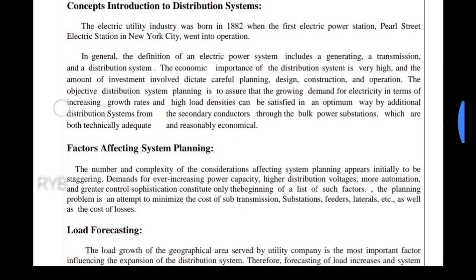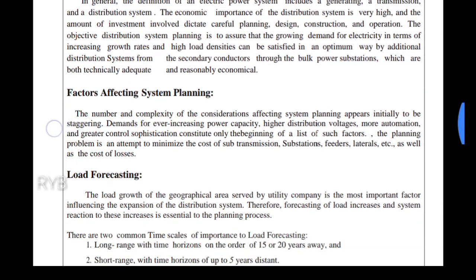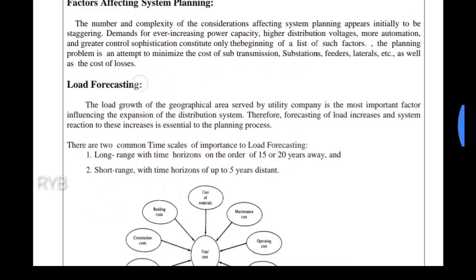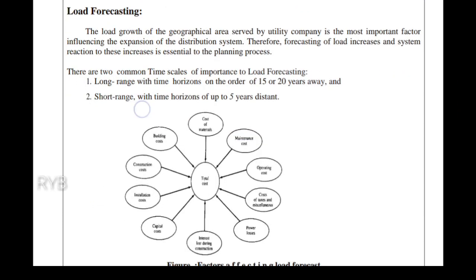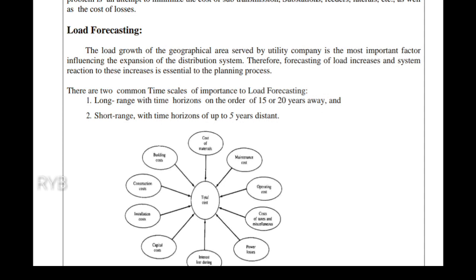The factors affecting system load forecasting — the load growth of the geographical area served by a utility company is the most important factor influencing the expansion of the distribution system. Therefore, load forecasting of load increases and the system's reaction to those increases is essential to the planning process.